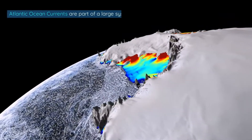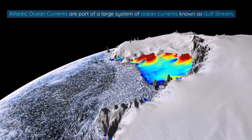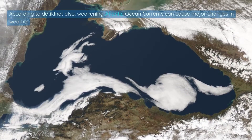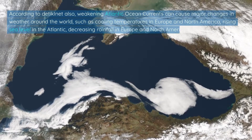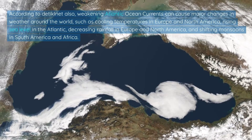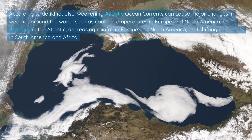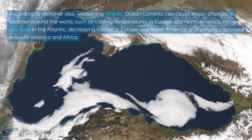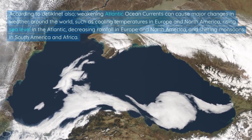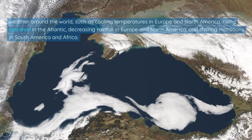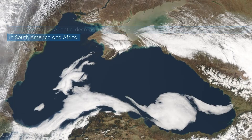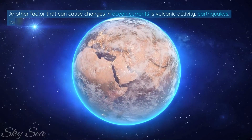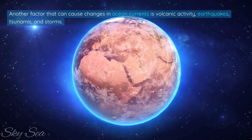Atlantic Ocean currents are part of a large system of ocean currents known as the Gulf Stream. According to Dedeck Inet, weakening Atlantic Ocean currents can cause major changes in weather around the world, such as cooling temperatures in Europe and North America, rising sea levels in the Atlantic, decreasing rainfall in Europe and North America, and shifting monsoons in South America and Africa.